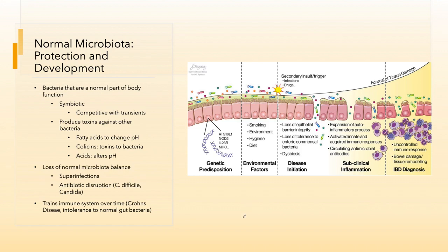Normal microbiota also have a defensive effect for us. It is in their best interest to make sure that our cells are well-protected and that our body is well-protected. So these are sometimes referred to as our symbiotic bacteria. We do have a couple of different types of relationships with our normal flora, but all of them are symbiotic relationships. Normal flora are bacteria that are permanent residents in our body. We have normal flora in our gastrointestinal tract, on our skin, in our mouths, ears, nose, respiratory tract — anywhere that's pretty much exposed to the outside world.